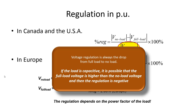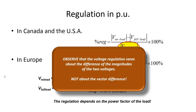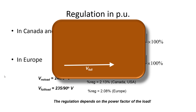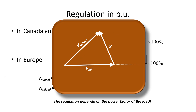If the load is capacitive, the full load voltage may be higher than the no-load voltage, making regulation negative. Observe that voltage regulation concerns the difference in magnitudes of the two voltages, not the vector difference. If the full load and no-load voltages have the same magnitude but different angles, the difference in magnitudes is zero and the regulation is zero.